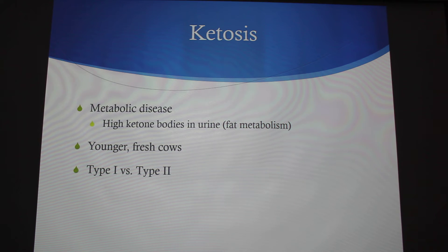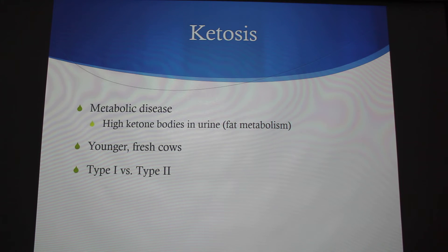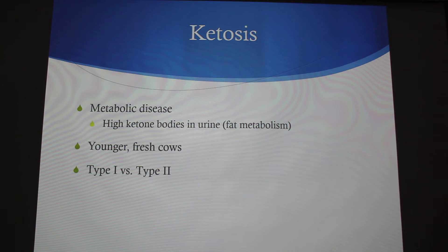Ketosis involves high ketone bodies and essentially looks like diabetes on paper. There's a huge trend in younger cows and fresh cows right after they calf — they're not eating enough and are relying on fat metabolism in the liver. Type one occurs when they're fresh and not eating enough; type two is during peak lactation when the negative energy balance can't support producing over 100 pounds of milk a day.